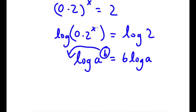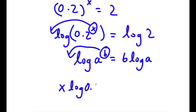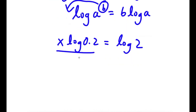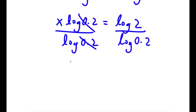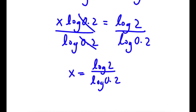So in this case, I have log 0.2 to the power of x, and I can move x to the front. So now I have x times log 0.2 is equal to log 2. If I divide both sides by log 0.2, these cancel out, and I get x is equal to log 2 over log 0.2.